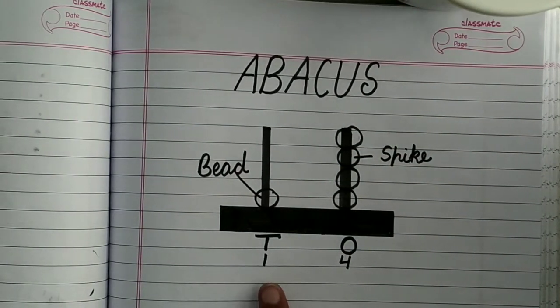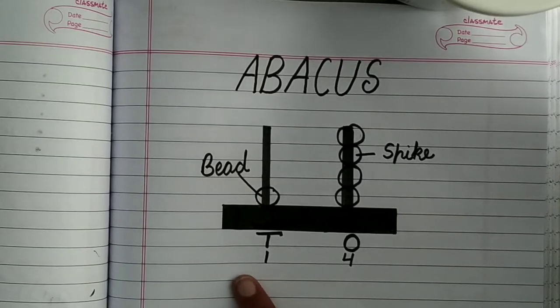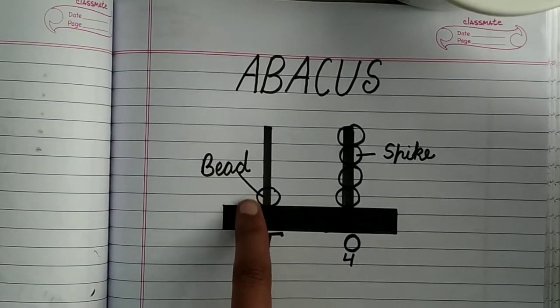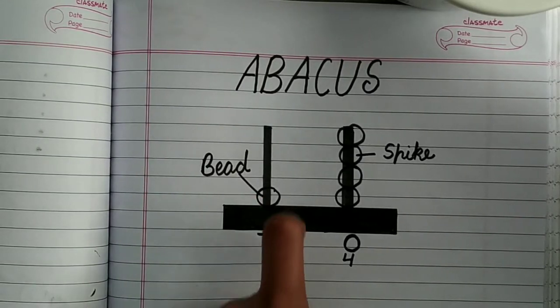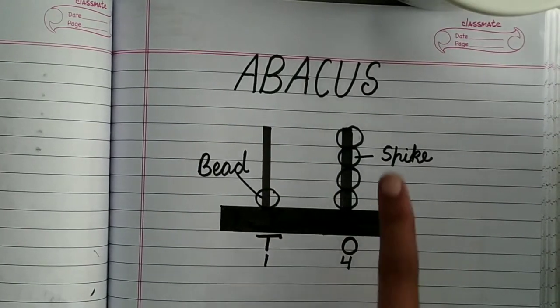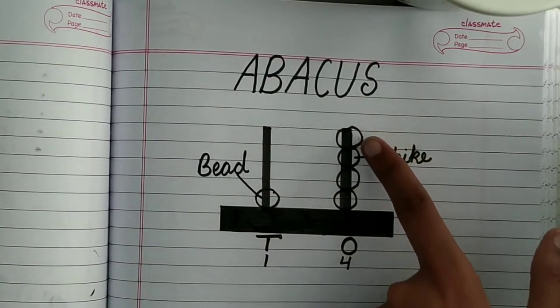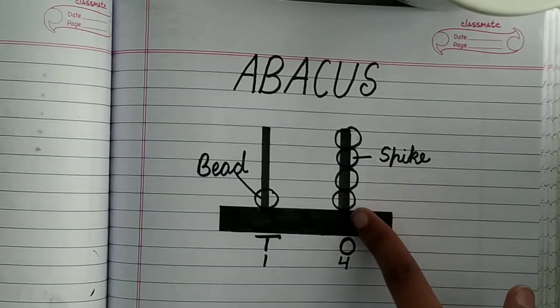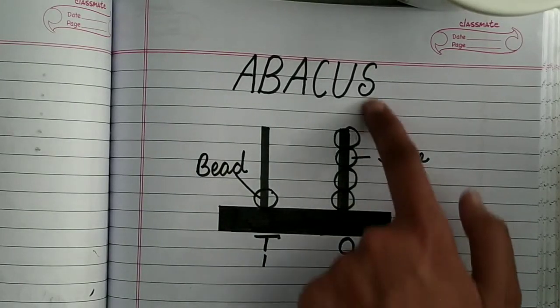So to write one, four, fourteen. I have inserted one bead in the tens spike and four beads. One, two, three and four. Four beads in the ones spike.